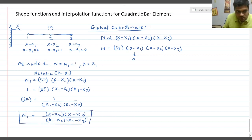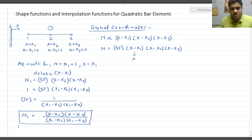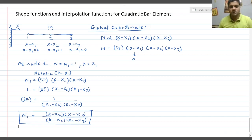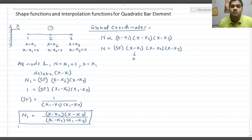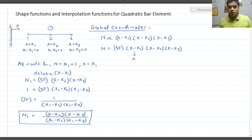Closely observing N1: the numerator contains x squared, so the shape function is an order-2 polynomial. This completely coincides with the order of the element — the quadratic bar element is also order 2. So the shape function order matches the element order.